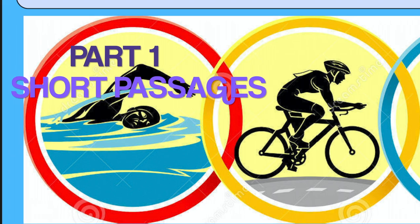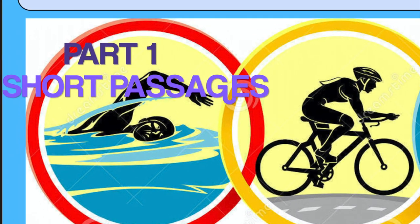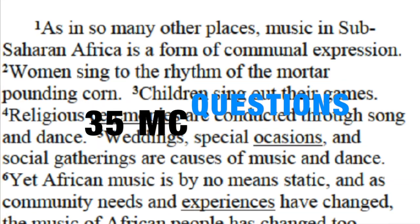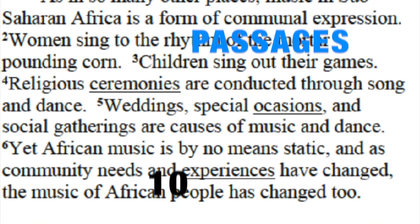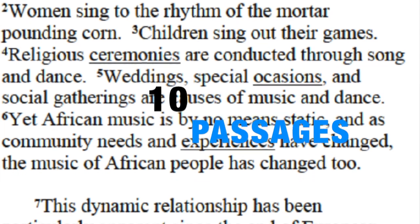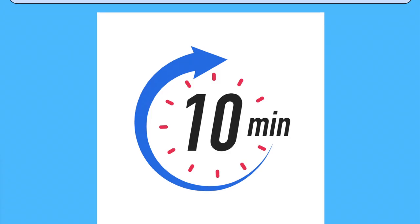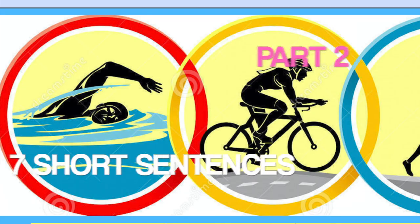The first leg of your triathlon is going to be short passages. You're going to have 35 multiple choice questions and 10 passages to read through. A really good pace for this is 10 minutes per passage.